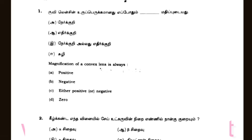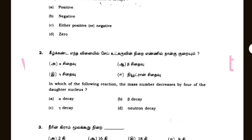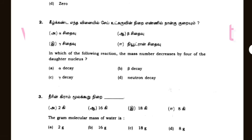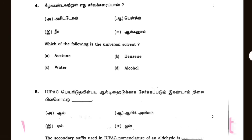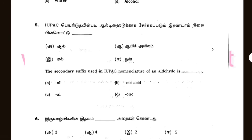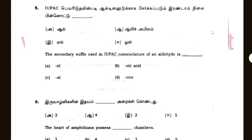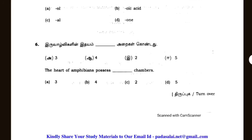The QV cells are the same. In which of the following reaction does the mass number decrease by 4? This relates to the daughter nucleus. The gram molecular mass of water is given. Which of the following is the universal solvent? The secondary solvent used in IUPAC. The heart of ambience possesses chambers.